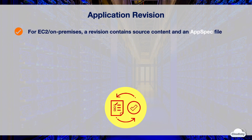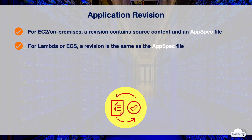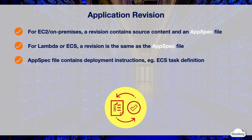In CodeDeploy, a revision is a version of source files to be deployed, or scripts to be run on your instance. For deployments to EC2 or on-premises servers, a revision is an archive file that contains source contents such as the source code, web pages, executable files, and deployment scripts, along with an app spec file for application specification. For deployments to ECS or Lambda, a revision is the same as the app spec file. The app spec file contains instructions about how a revision should be deployed, such as the task definition used for ECS deployment or scripts to run on the EC2 instance.